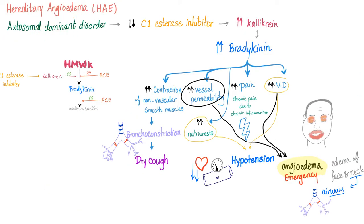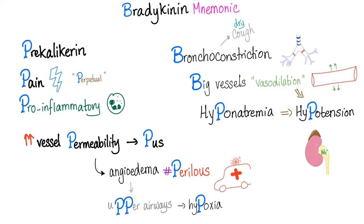Hereditary angioedema: genetic disorder → decreased C1 esterase inhibitor → kallikrein not inhibited → increased bradykinin → dry cough, hypotension, angioedema, which is an emergency. My bradykinin mnemonic: everything here starts with B or P.